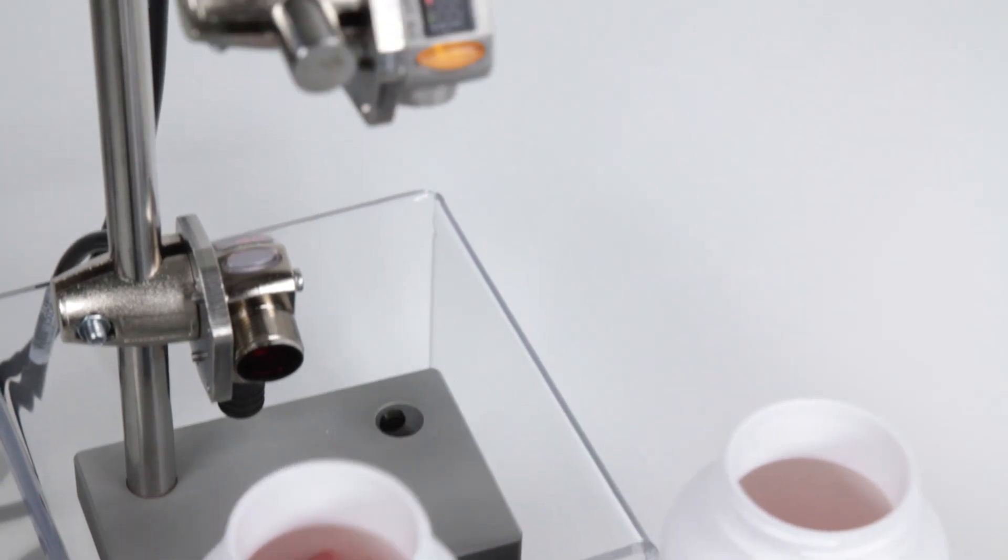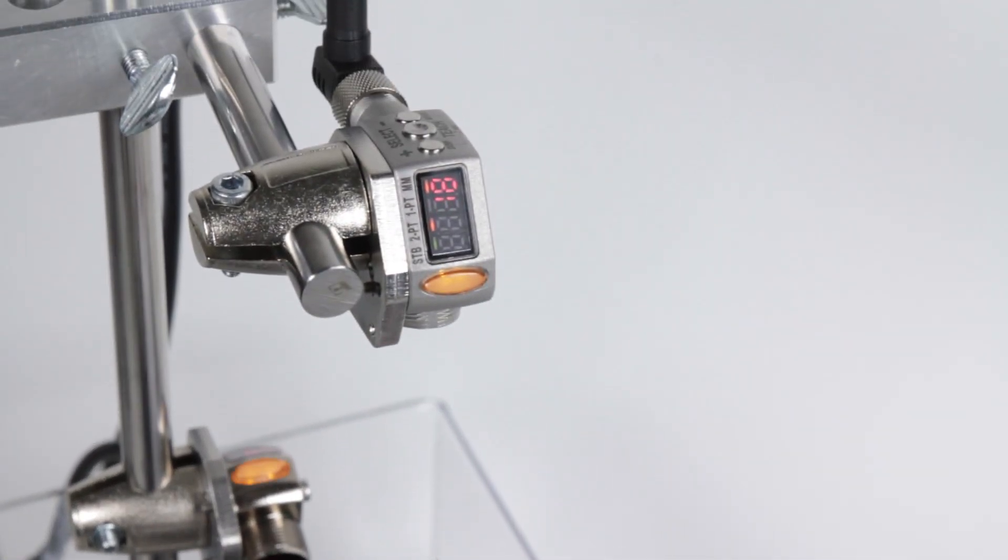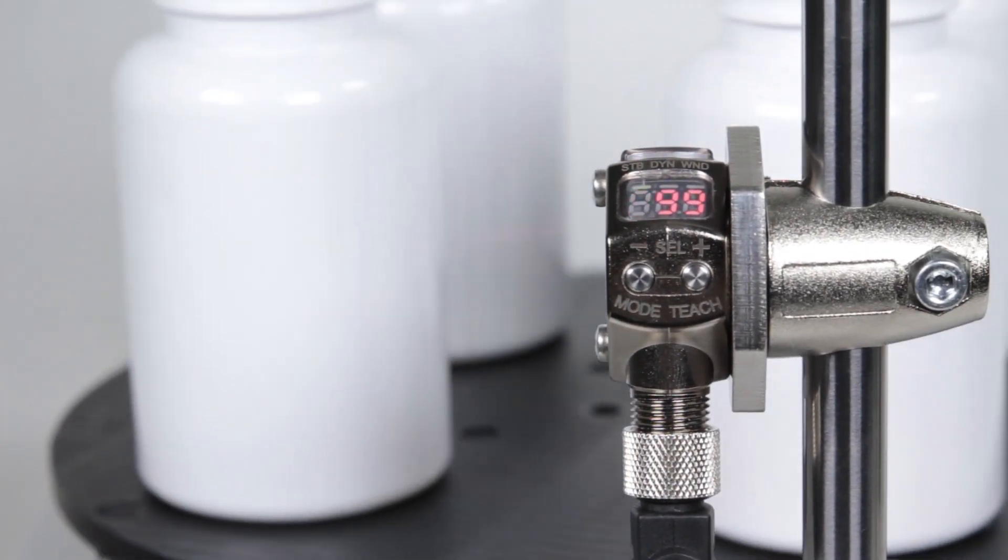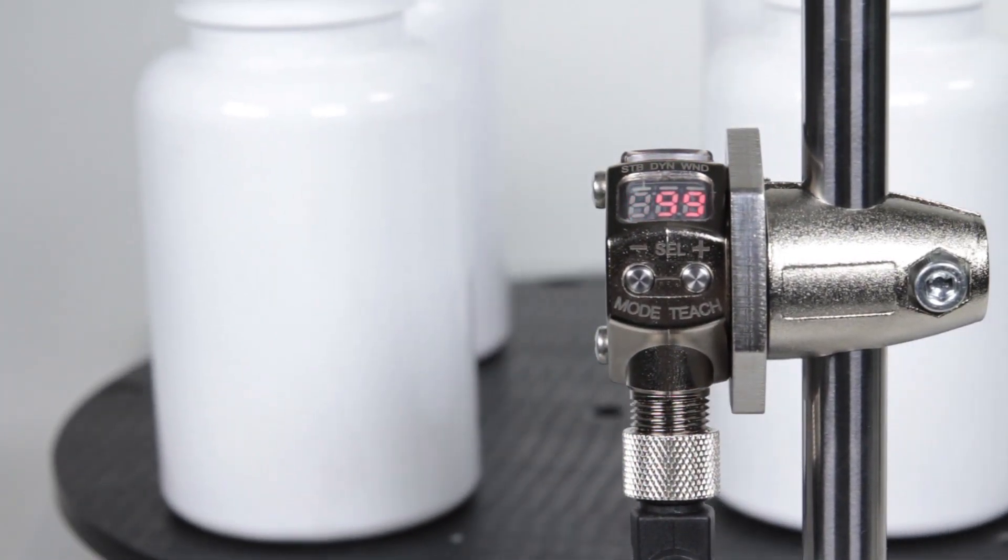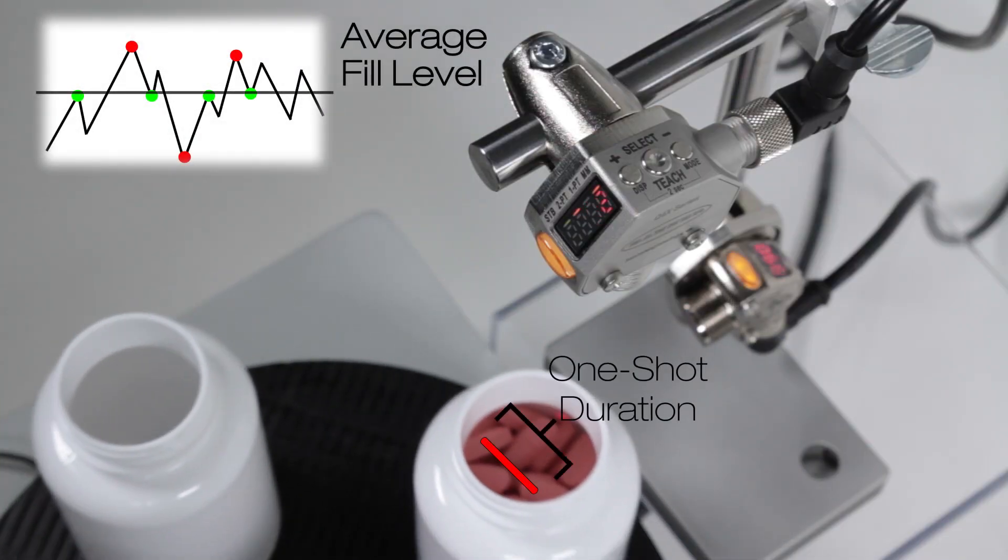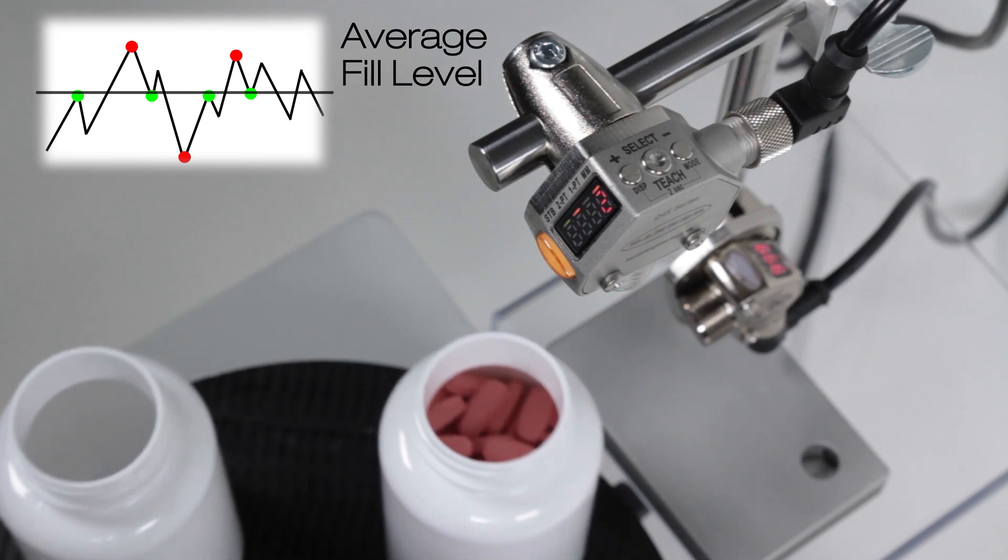The Q4X comes with advanced measurement modes, including a remote trigger input. In this case, a Q3X sensor is being used to send an extended one-shot discrete output to tell the Q4X when to measure and for how long. The Q4X will measure for a user-defined period of time and output a single analog output that reflects the average distance measured.